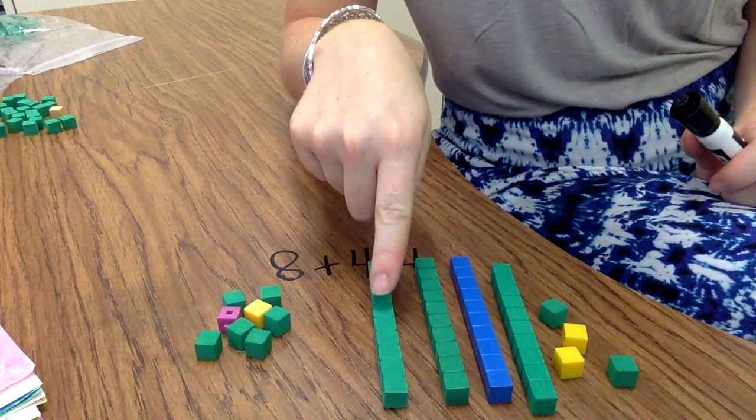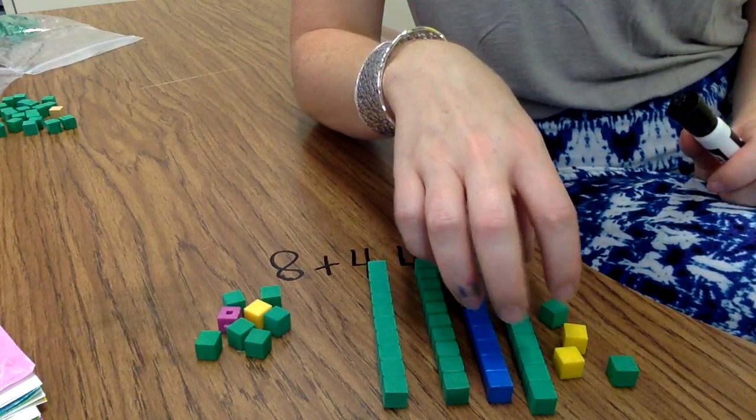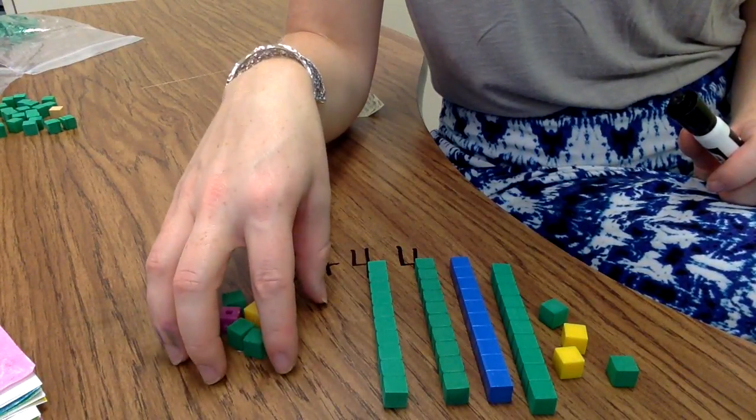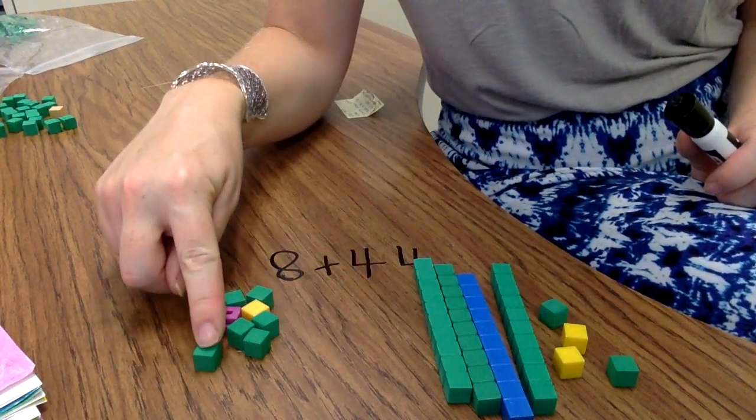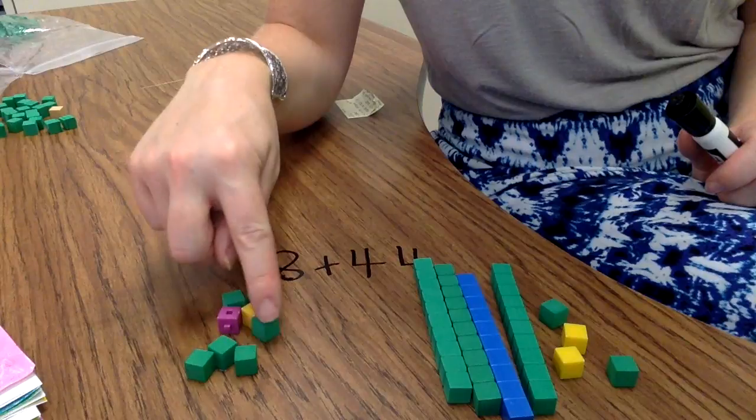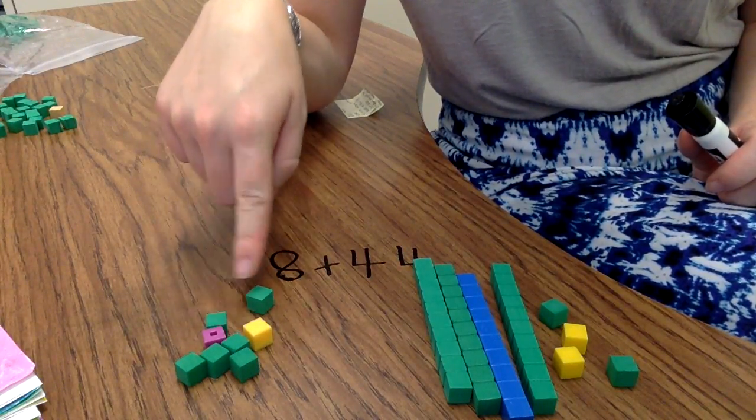So I know this is 44. I don't need to count it again. I've already got that amount in my head. I'm going to count on with these 8. So 44, 45, 46, 47, 48, 49, 50, 51, 52.